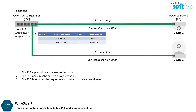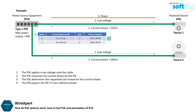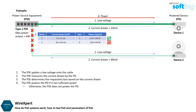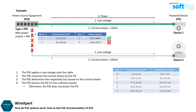If the PSE has sufficient power, it proceeds to power the PD. Otherwise, the PSE does not power the PD. The current draw during classification is known as the classification current.